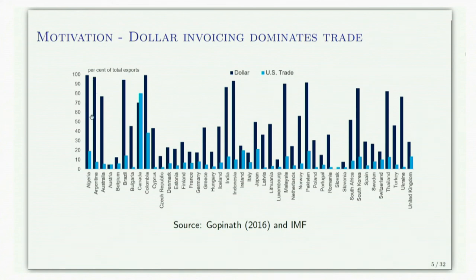Dollar dominance has led to a new paradigm that is shifting policy views. The inference drawn is that an exchange rate depreciation by a country invoicing in dollars does not provide a boost to exports — there's no expenditure switching towards a country's exports when the currency depreciates. This means flexible exchange rates have a more limited role as automatic stabilizers, and hence the exchange rate channel of monetary policy is weaker or impaired.